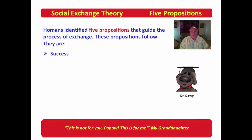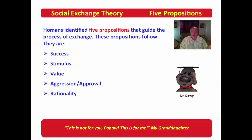The five propositions are: first, success; then stimulus; value; aggression-approval; and finally, rationality.